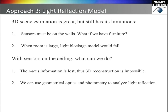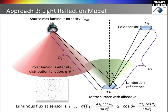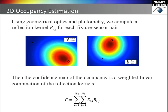We have talked about the 3D scene estimation approach — it is good, but still has limitations. It is based on a light blockage model. In some cases this model will not work. For example, if there is furniture in the room, we cannot put the sensors on the walls. And if the room is too large, the occupants may not block many light paths. This is why we propose our third approach, which assumes the sensors are on the ceiling and is based on a light reflection model. For each fixture and each sensor, we consider a small patch on the floor and compute the number of photons that start from the fixture, are reflected by the patch, and finally arrive at the sensor. For each fixture-sensor pair, we compute a reflection kernel, and our final confidence map of the occupancy is the weighted linear combination of the reflection kernels. The weights are the entries of E-hat.